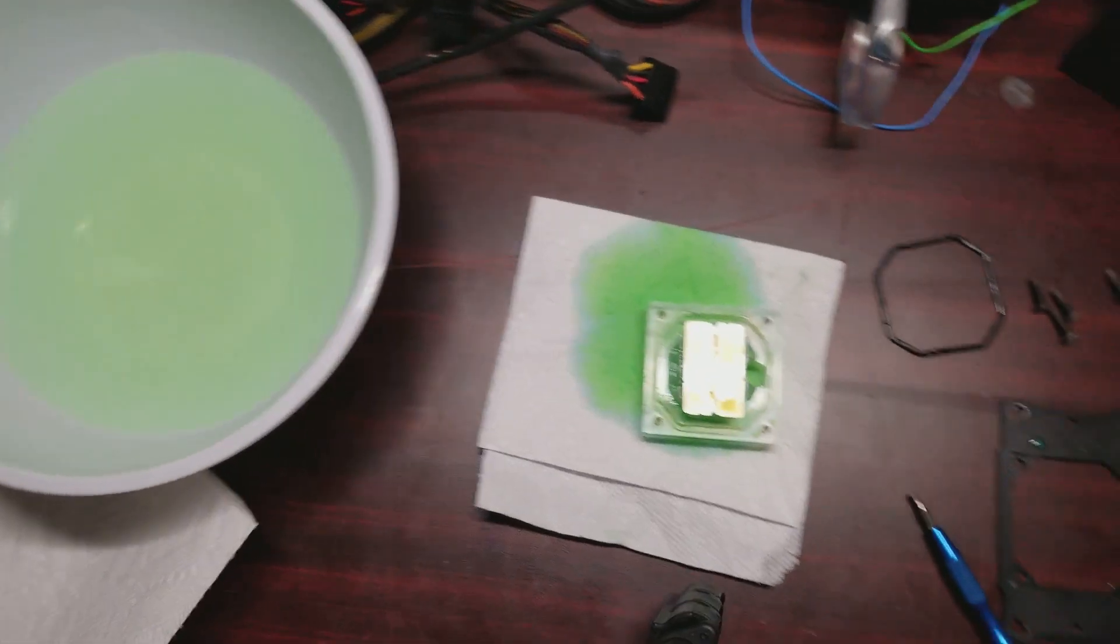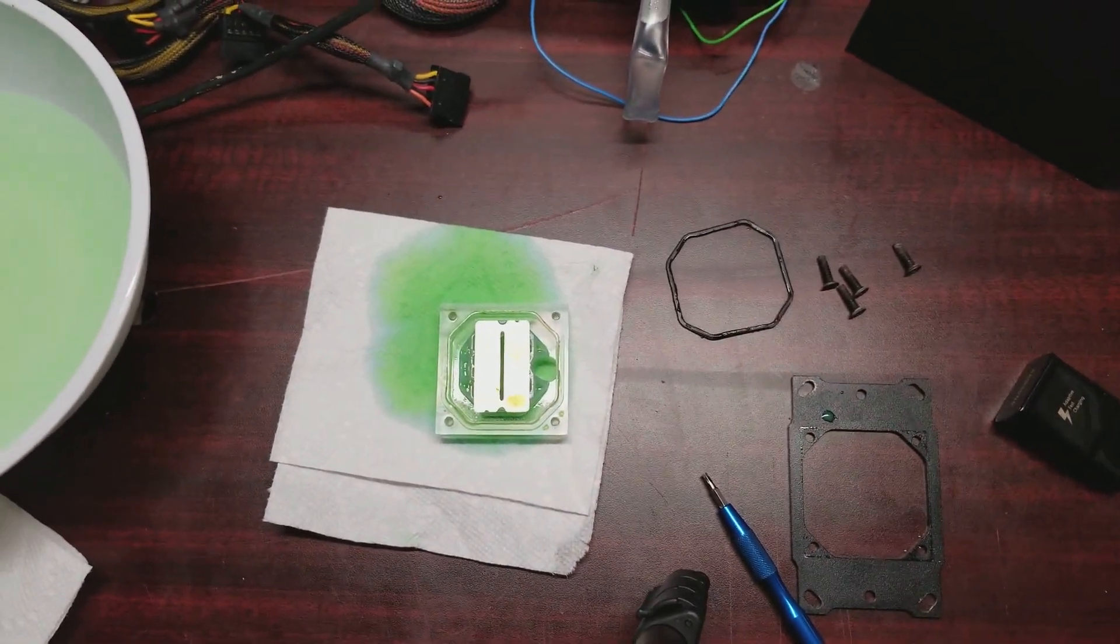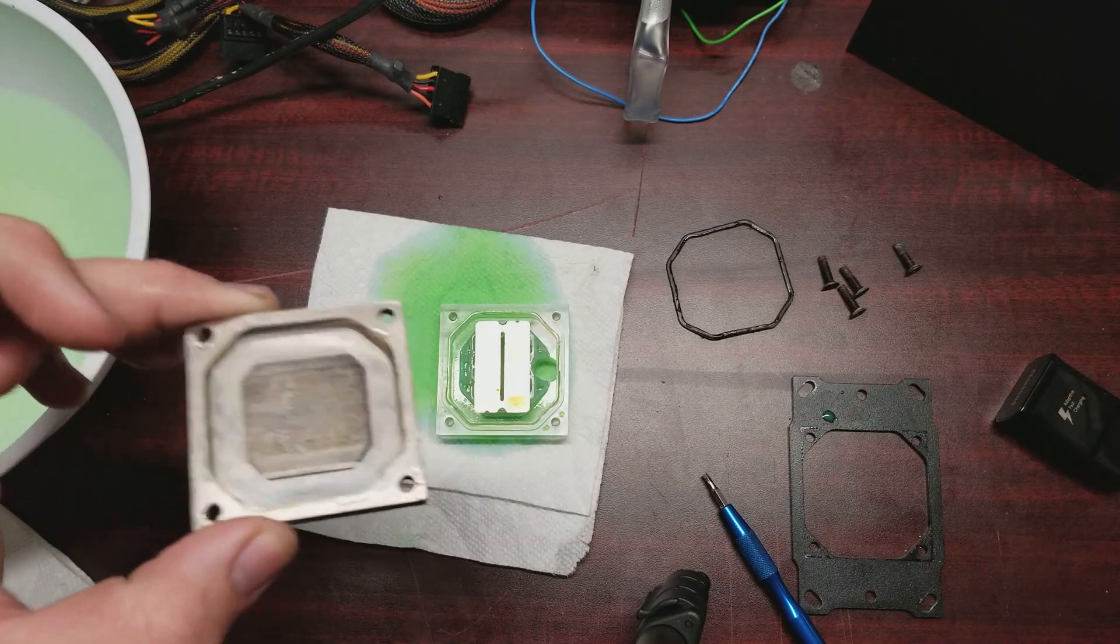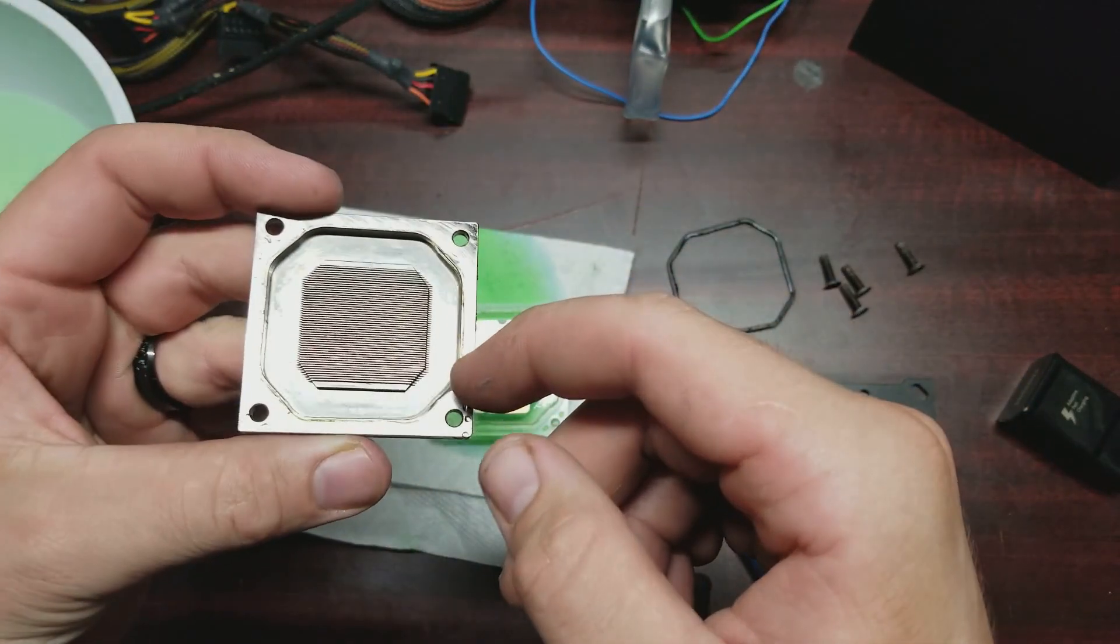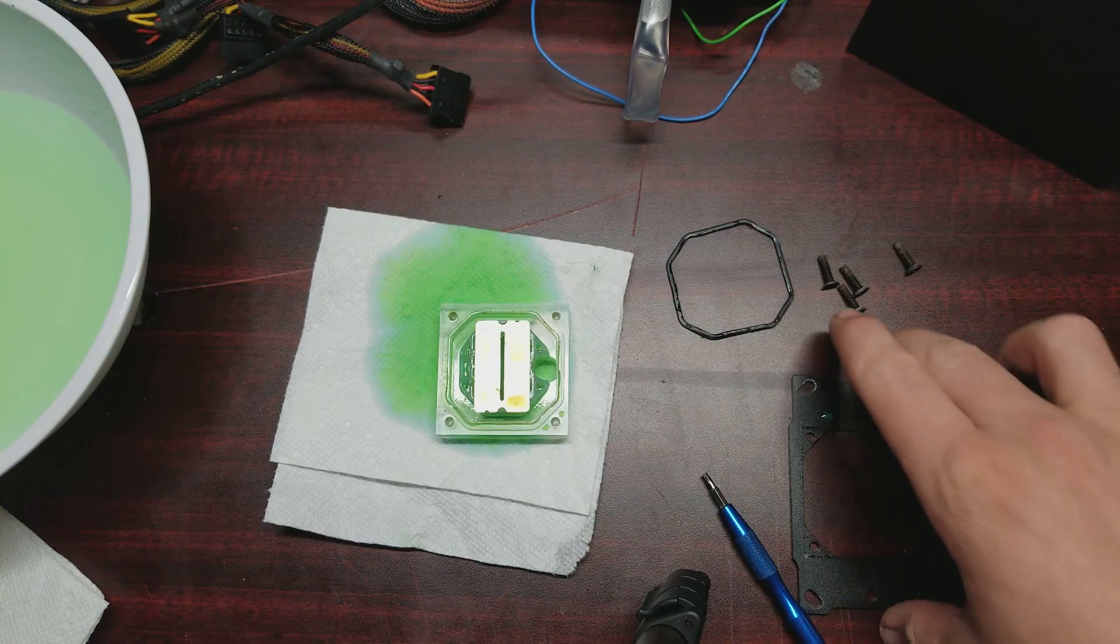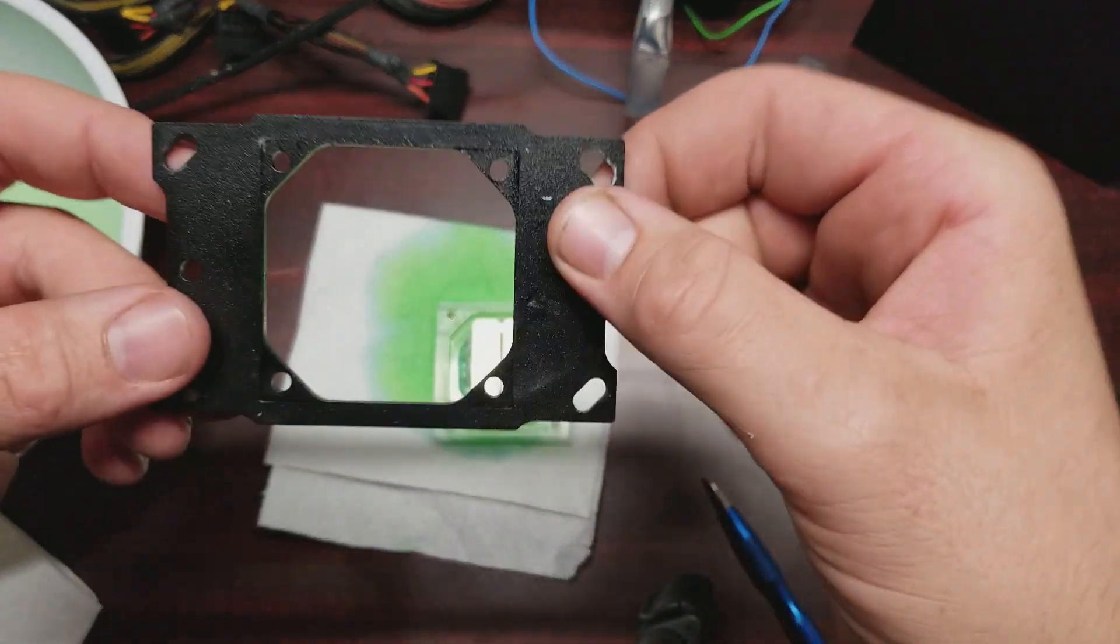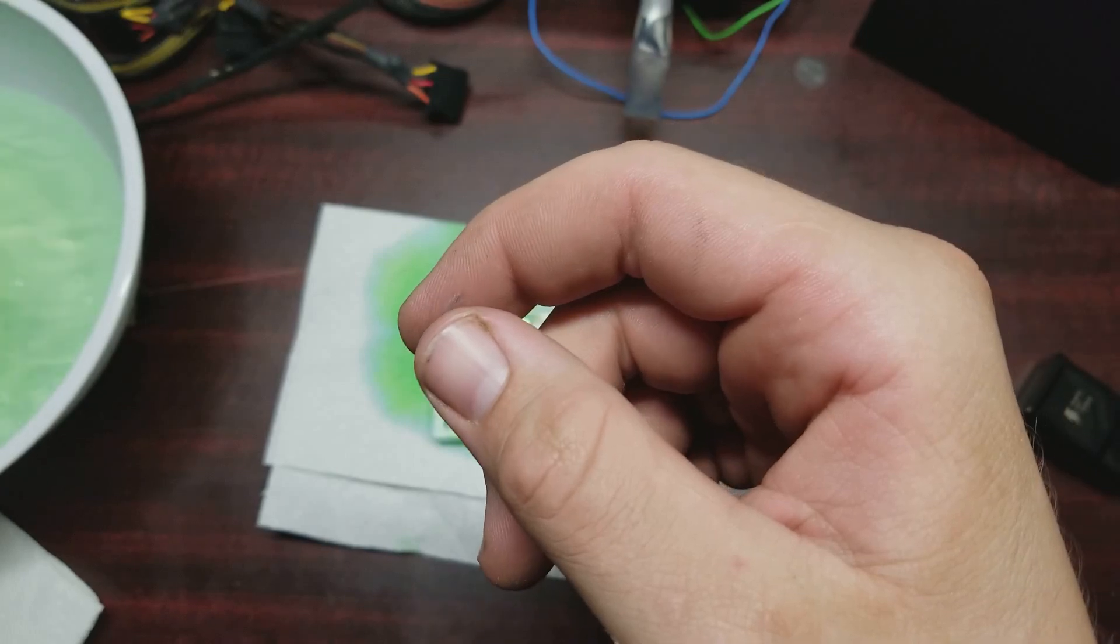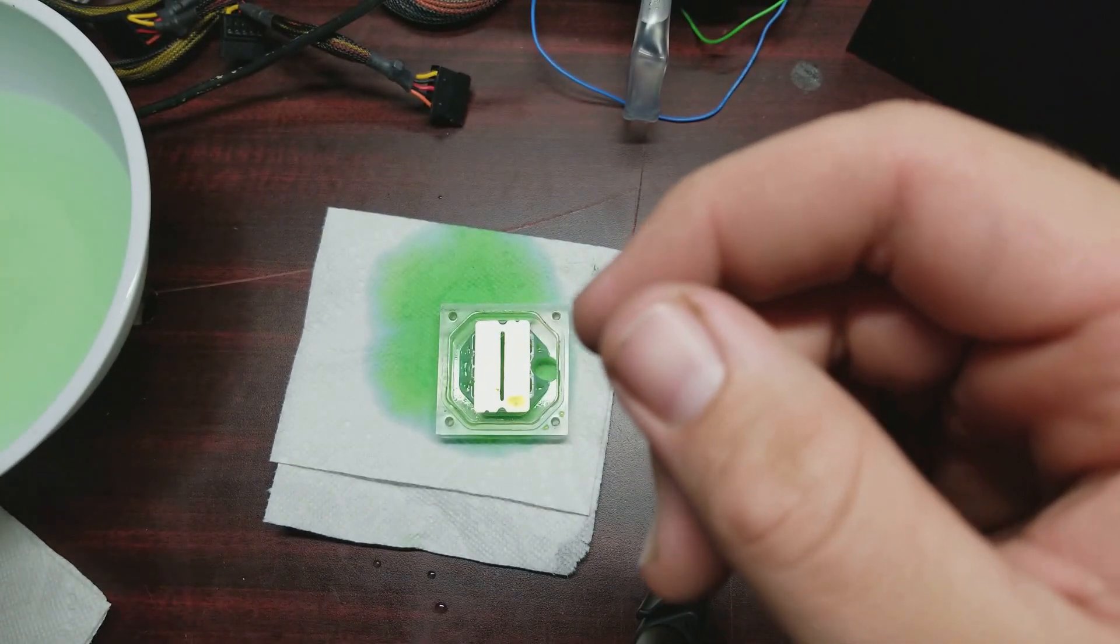Set it down over there on the paper towel. Like I said, remembering how you had it. And so ours was pulled off like this. The mounting plate, you really don't have to clean. But I have coolant on there. So just a quick dunk and good enough for me.